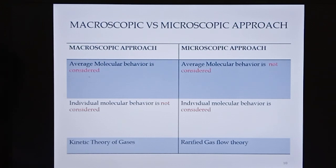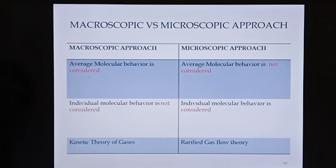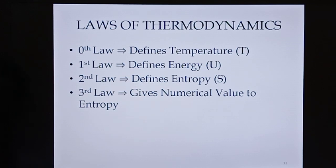Next comes the differentiation between macroscopic approach and microscopic approach of the system. Macroscopic approach involves average molecular behavior study. There are four important laws: zeroth law, first law, second law, and third law. Each law defines a parameter: zeroth law defines temperature, first law defines energy, second law defines entropy, and the third law gives the numerical value of entropy.